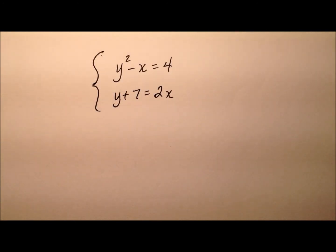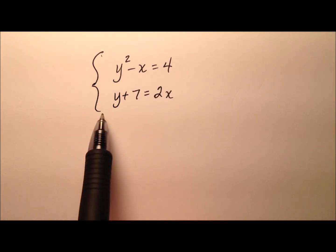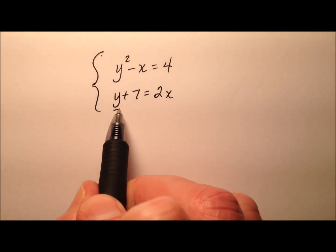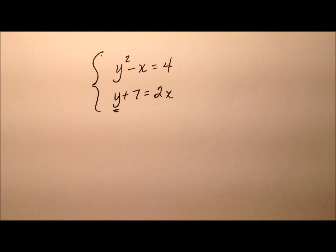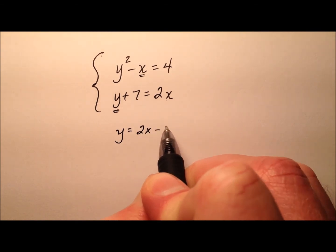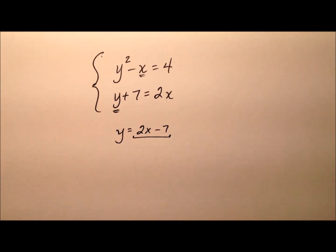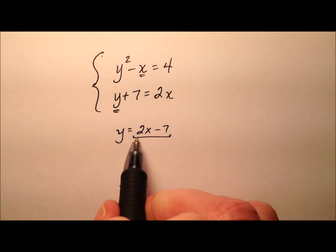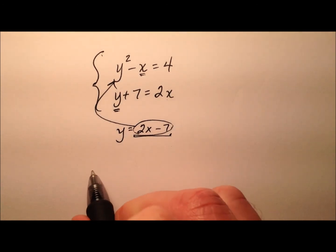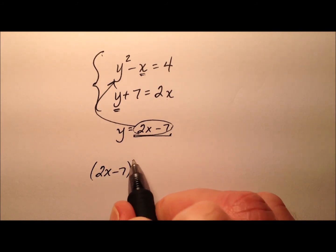In this second example we have y squared minus x equals 4 and y plus 7 equals 2x. So substitution looks great. We could actually either solve for y in this second equation and plug it into the first, or we could solve for x in the first and plug it into the second. There really is no reason to do one more than the other. So maybe let's go ahead and solve for y in this second equation, and we'll end up with 2x minus 7. So once we know that that y actually equals the expression 2x minus 7, we can go ahead and substitute it in for the y but in the other equation. So we'll end up with 2x minus 7 squared minus x equals 4.